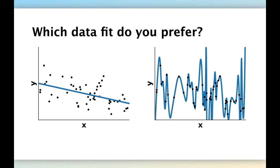Let's start with an example. Consider these two prediction models, the blue lines. On the left hand side, you see a straight line that goes through a cloud of data points.